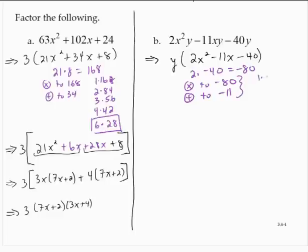1 and 80, 2 and 40, 3 doesn't work, 4 and 20, 5 and 16. And I'm going to stop there. Because 5 and 16 have a difference of 11. Since I need a negative 11, I will use a positive 5 and a negative 16.